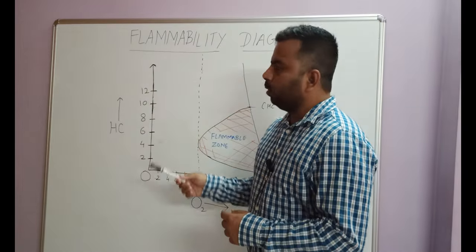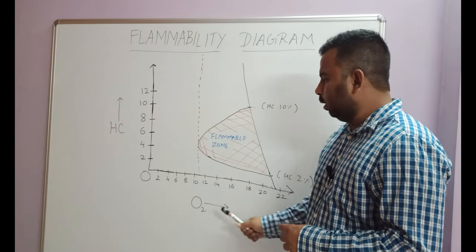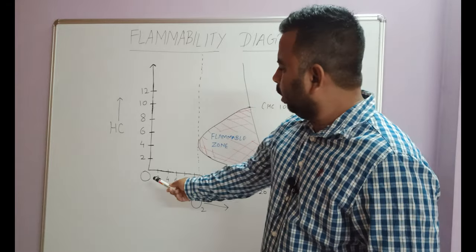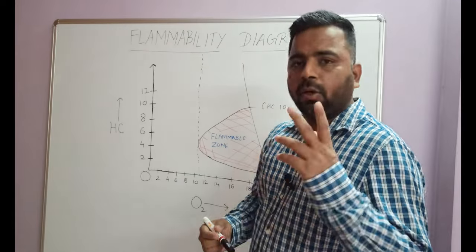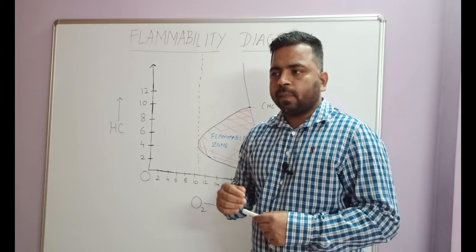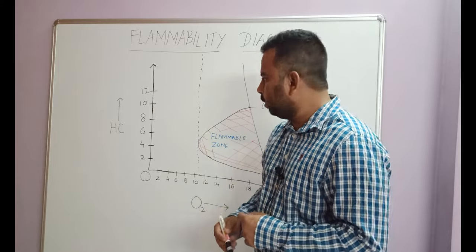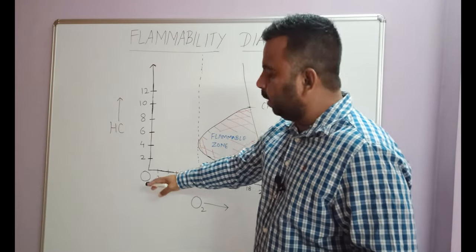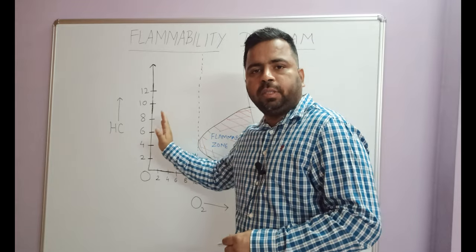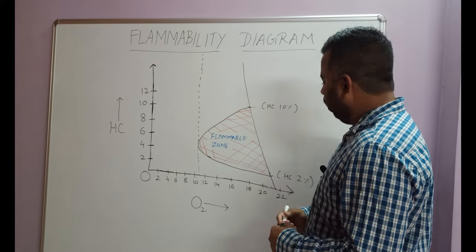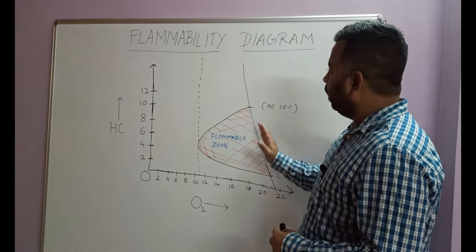Let us study the flammability diagram. It is a graphical representation with x-axis and y-axis. On the x-axis, I have oxygen content from 0 to 22, because it is 1% higher than 21. On the y-axis, the vertical axis, I have hydrocarbon from 2%, 4, 6, 8, 10, and 12. Recall that 2% to 10% range is for methane gas. We have different percentages for different gases, but 2% and 10% is the standard set by ISGOTT, which is International Safety Guide for Oil Tankers and Terminals. The first easiest step is to draw a vertical line at 11%, because combustion on this side cannot take place.